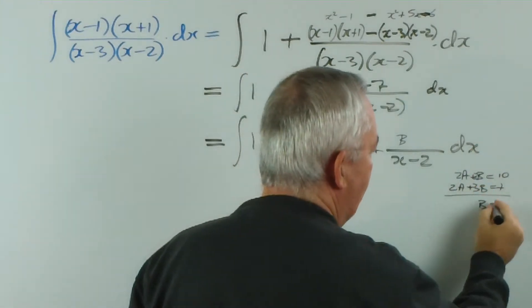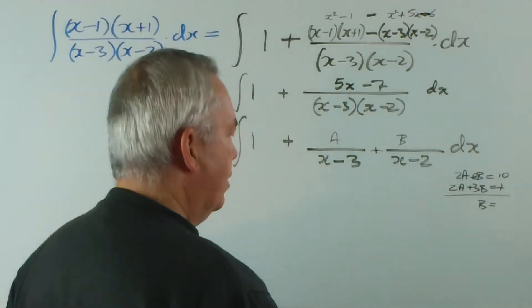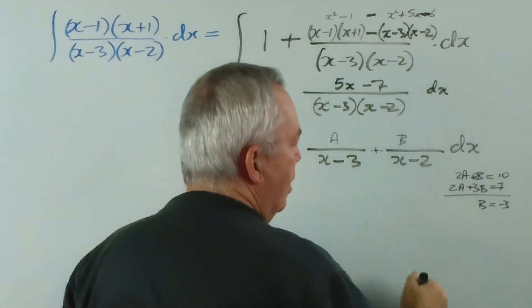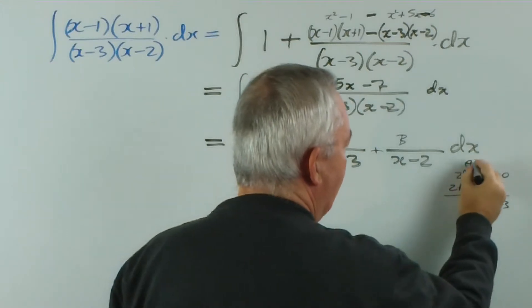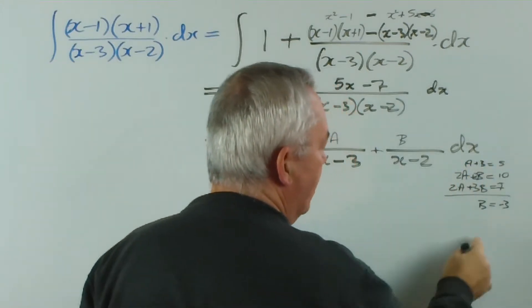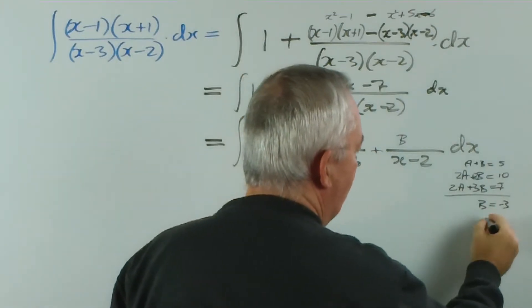Subtracting upwards we get b... is that a seven I wrote? It is three. Seven minus ten is negative three. And I did have a plus b equals five. So if b is negative three, then a will equal eight.